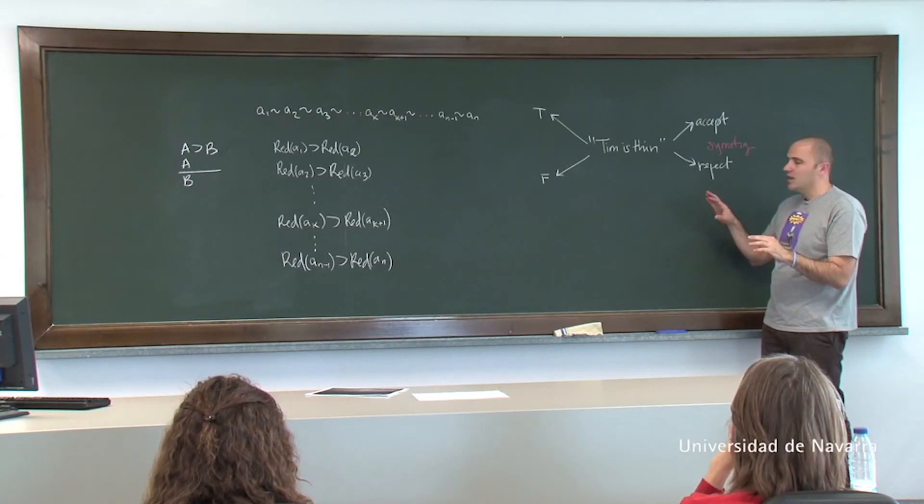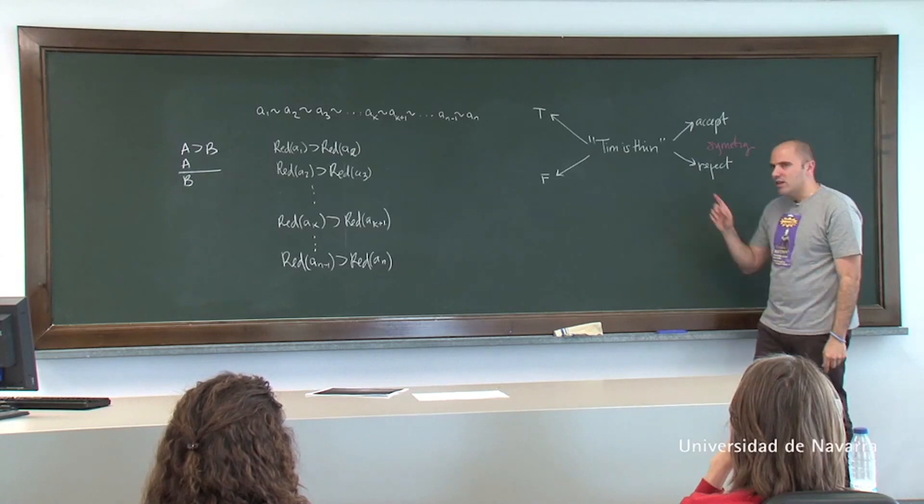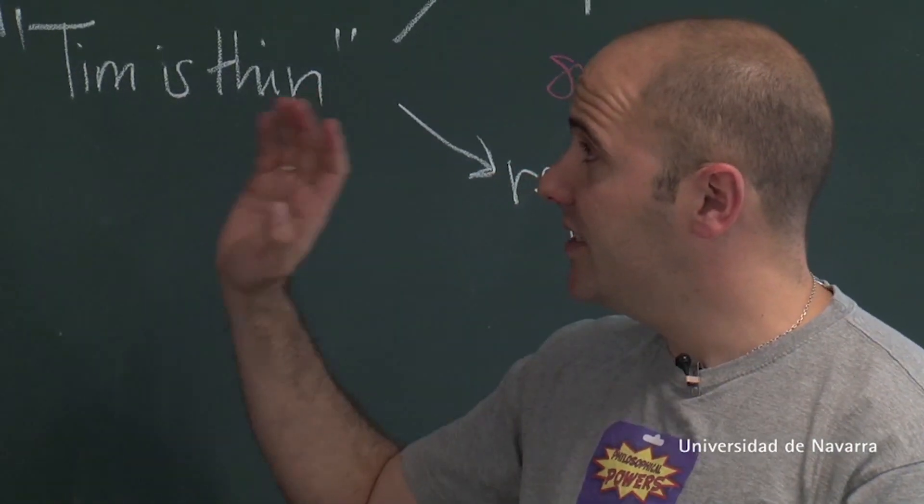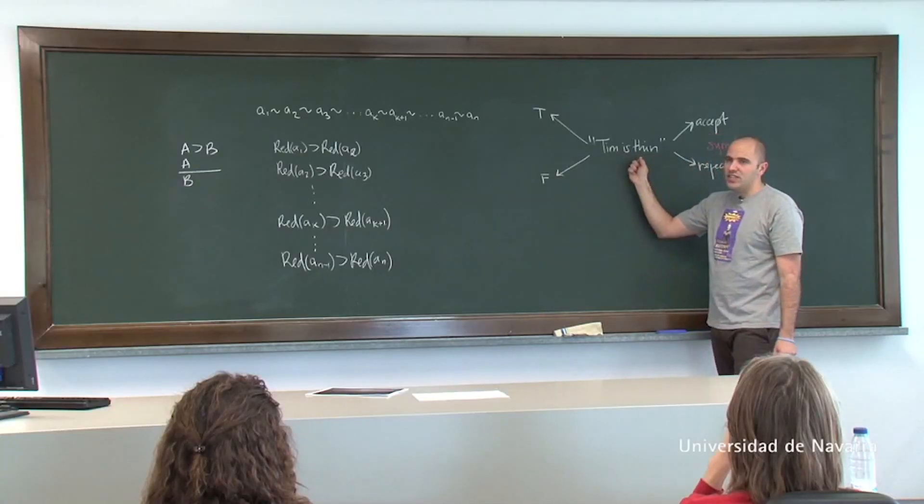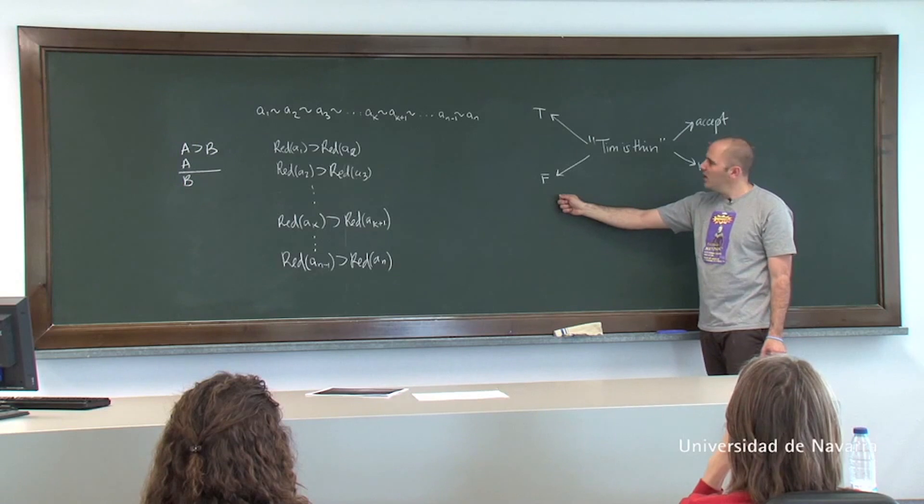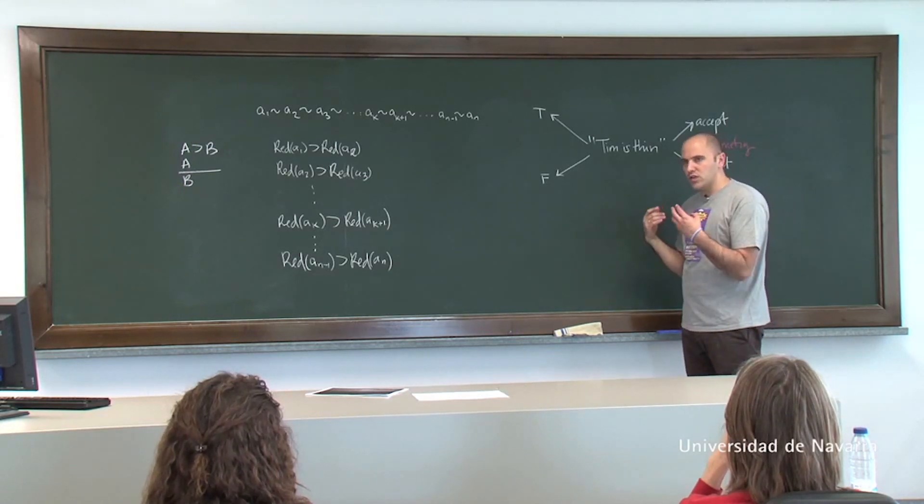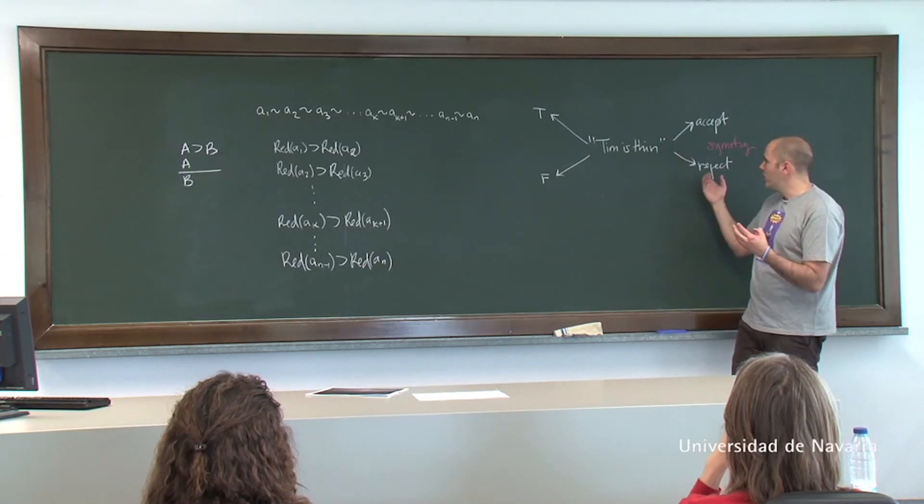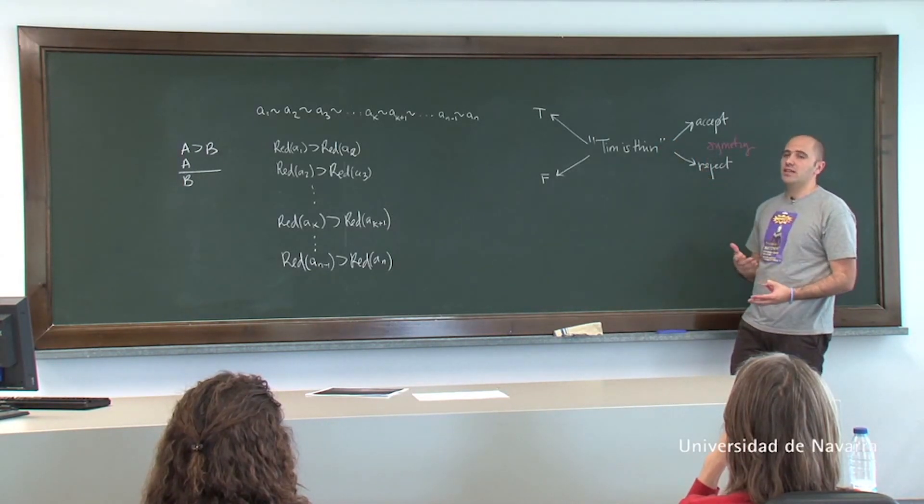In borderline cases between acceptance and rejection. Now classical logic, classical semantics in particular, tells you that either Tim is thin is true or Tim is thin is false.